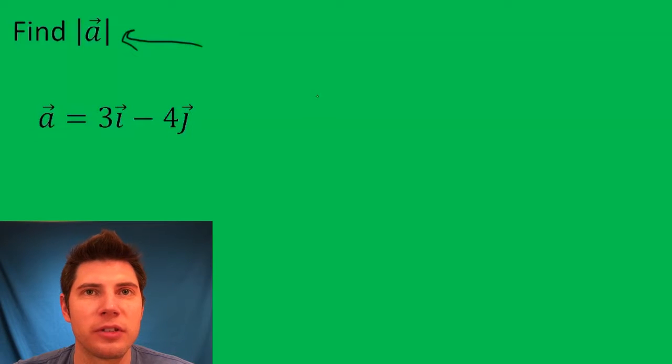So ultimately, 3i minus 4j is a vector that looks like this right here, and we just want to know how long is it.